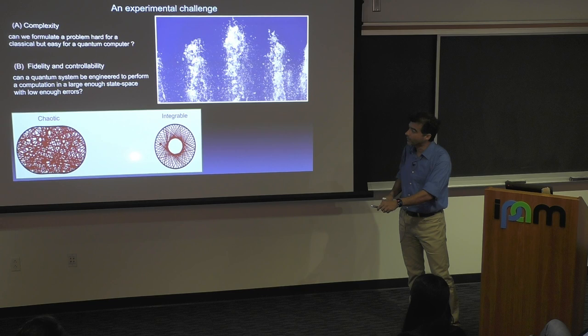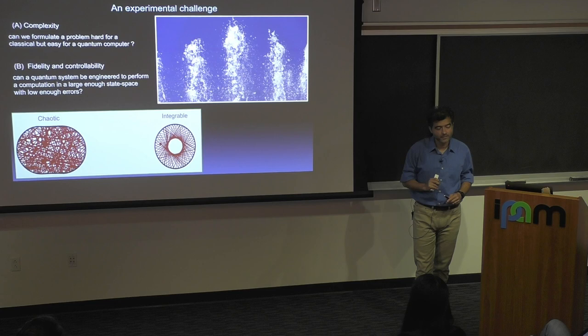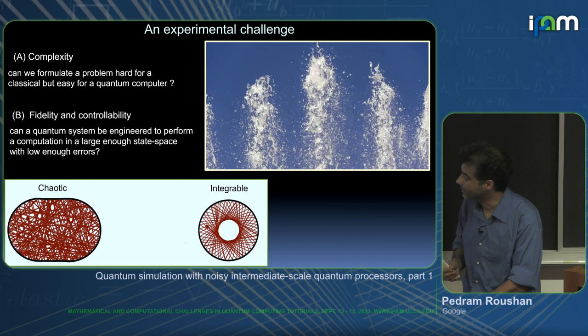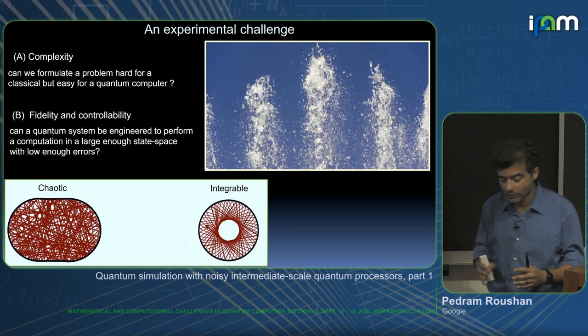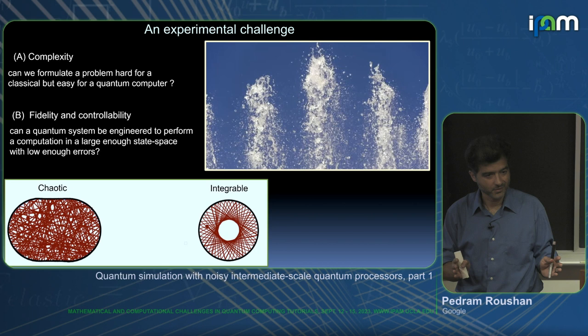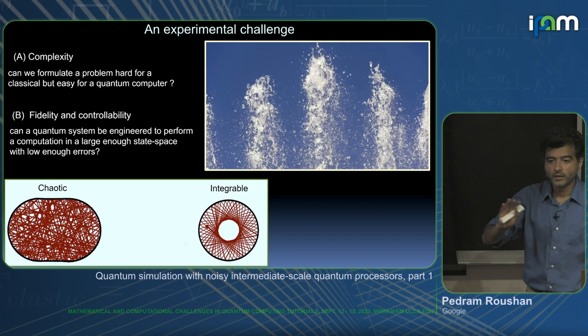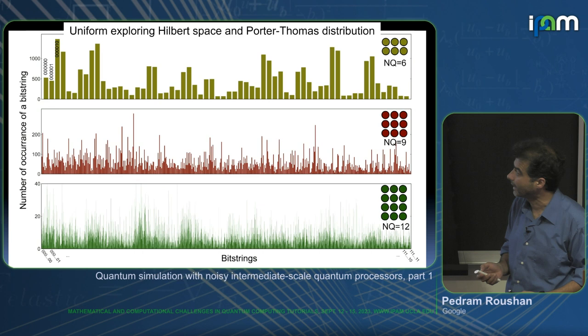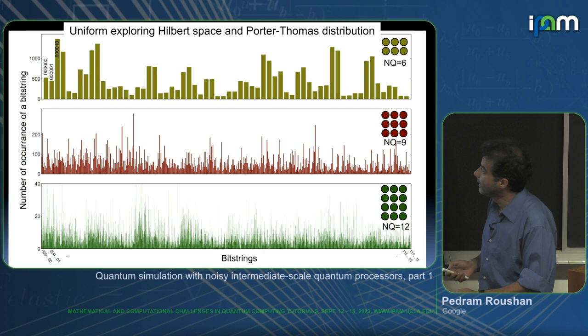Analogous to the Sinai billiard ball — you would eventually ergodically explore all available Hilbert space, meaning there are no symmetries. The gates chosen in the circuit were specifically chosen to ensure nothing is left — no symmetries. This is a key thing I try to convince you of, and here is the experimental evidence for it.